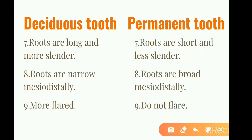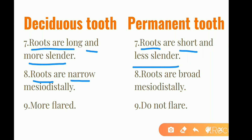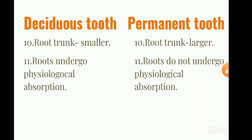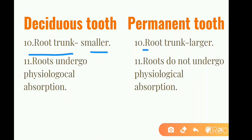Number 7: Deciduous tooth roots are long and more slender; permanent tooth roots are short and less slender. Deciduous tooth roots are narrow mesiodistally, while permanent tooth roots are broad mesiodistally. Deciduous tooth roots are more flared; permanent tooth roots do not flare. Deciduous tooth root trunk is smaller than permanent tooth root trunk.